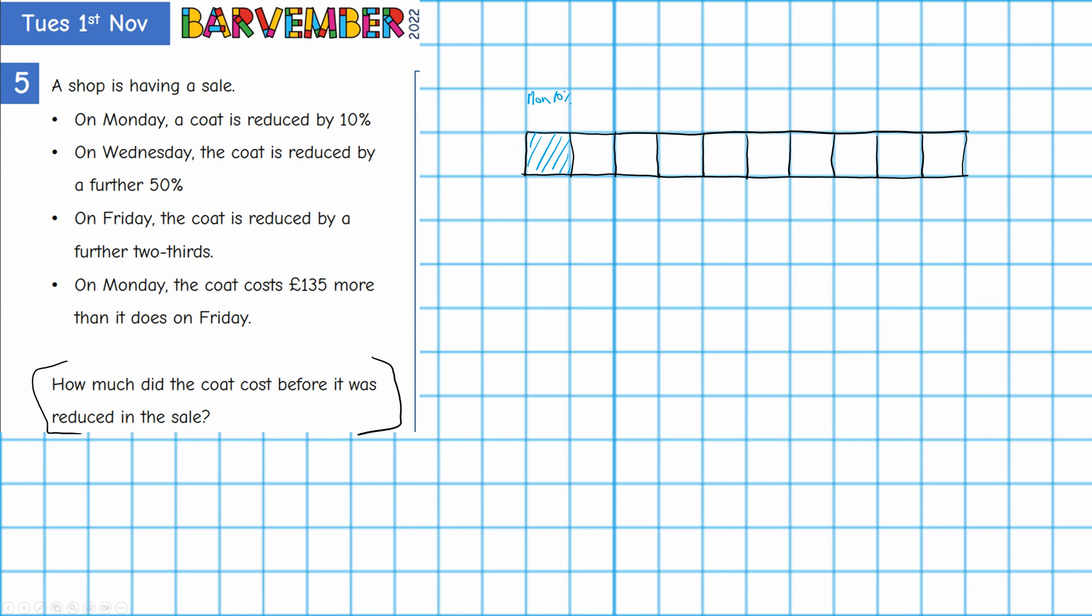On Wednesday the coat is reduced by a further 50%. Now we've got nine parts left, nine divided by two, half of nine is four and a half. So I'm going to have to divide. So that's one, two, three, four and a half.